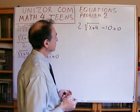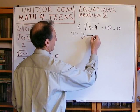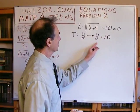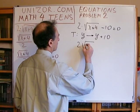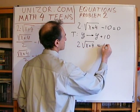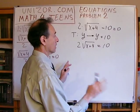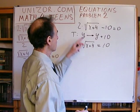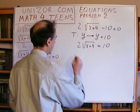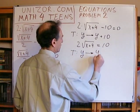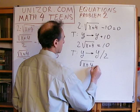The first invariant transformation is obvious — plus ten. We add ten to both sides of the equation and get: 2√(x + 4) = 10. This transformation is invariant, which means we have not lost anything and have not gained anything. Solutions of this equation are exactly the same as before. Now we can simplify further by another invariant transformation: divide by 2, to get √(x + 4) = 5.